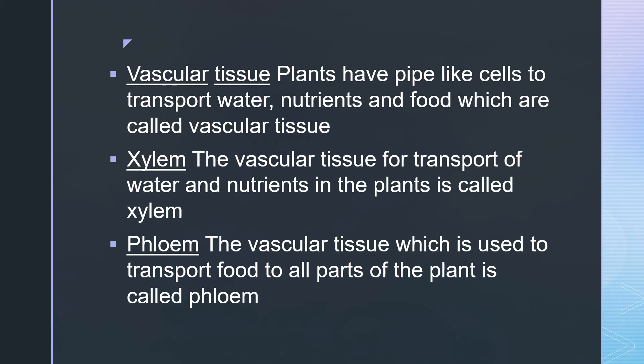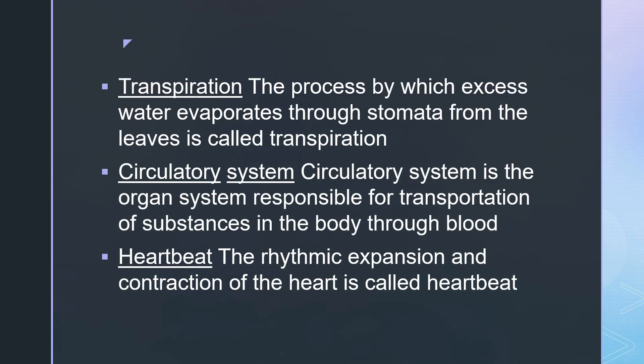Phloem — the vascular tissue which is used to transport food to all parts of the plant is called phloem. Transpiration — the process by which excess water evaporates through stomata from the leaves is called transpiration.